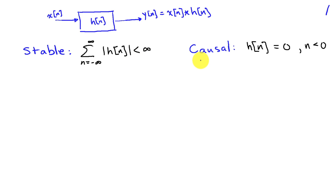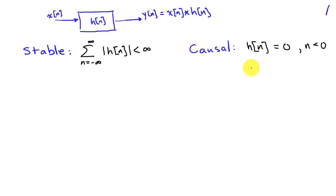Likewise, causality is easy to express in terms of the impulse response. It means that H of n must be zero for n less than zero, because the impulse response is the output of the system due to an input of unit energy occurring at time n equals zero and nowhere else. So we can't have an output before the input actually arrives.